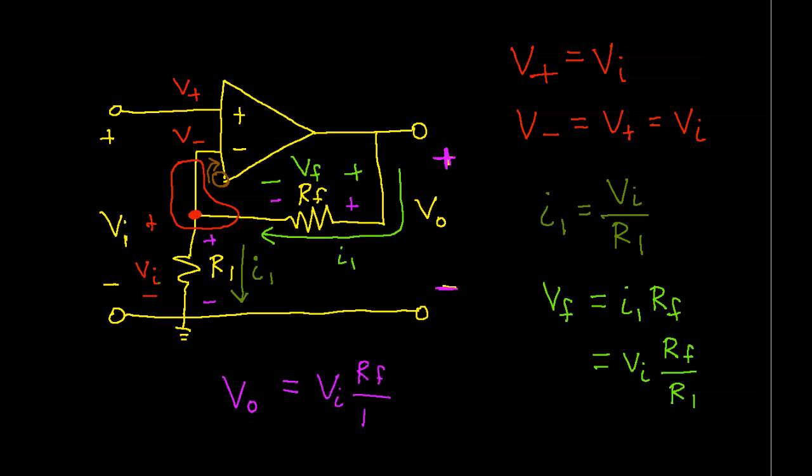We know that the voltage across RF is Vi RF over R1. That's basically this value. And we know that the voltage across R2 is Vi. So now we can factor out a Vi and we get Vi times 1 plus RF over R1. So there you have it. That basically gives us the output voltage of this non-inverting op-amp circuit in terms of RF and R1.